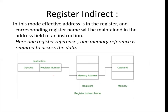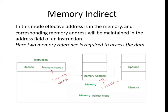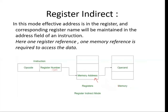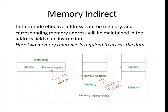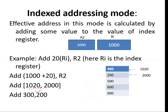Register indirect mode: from the instruction we get one register reference, and from that register we get a memory address, and from that memory address we fetch the operand. For memory indirect mode: from the instruction we get one memory address, at that memory address we get another memory address which is our effective address, and from that effective address we fetch the operand. These are the memory representations of the two addressing modes.